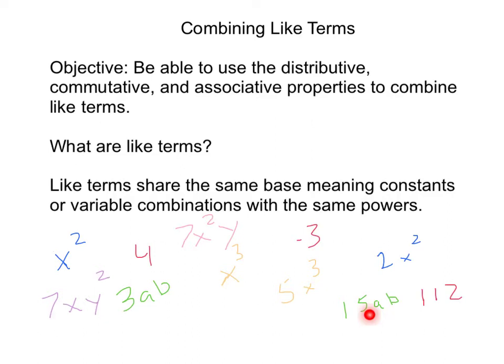So 3ab plus 15ab would be 18ab. And then last but not least, here we can see x cubed and 5x cubed. We would add those together to get 6x cubed.